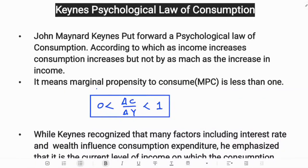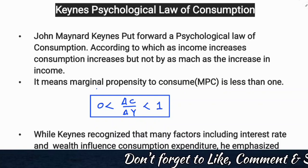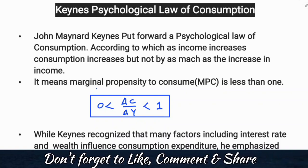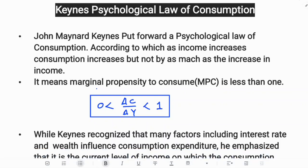Hello everyone. In this class we are going to discuss the Keynesian psychological law of consumption from macroeconomics. John Maynard Keynes, who is called the father of modern macroeconomics, put forward a psychological law of consumption, according to which as income increases, consumption increases but not by as much as the increase in income.